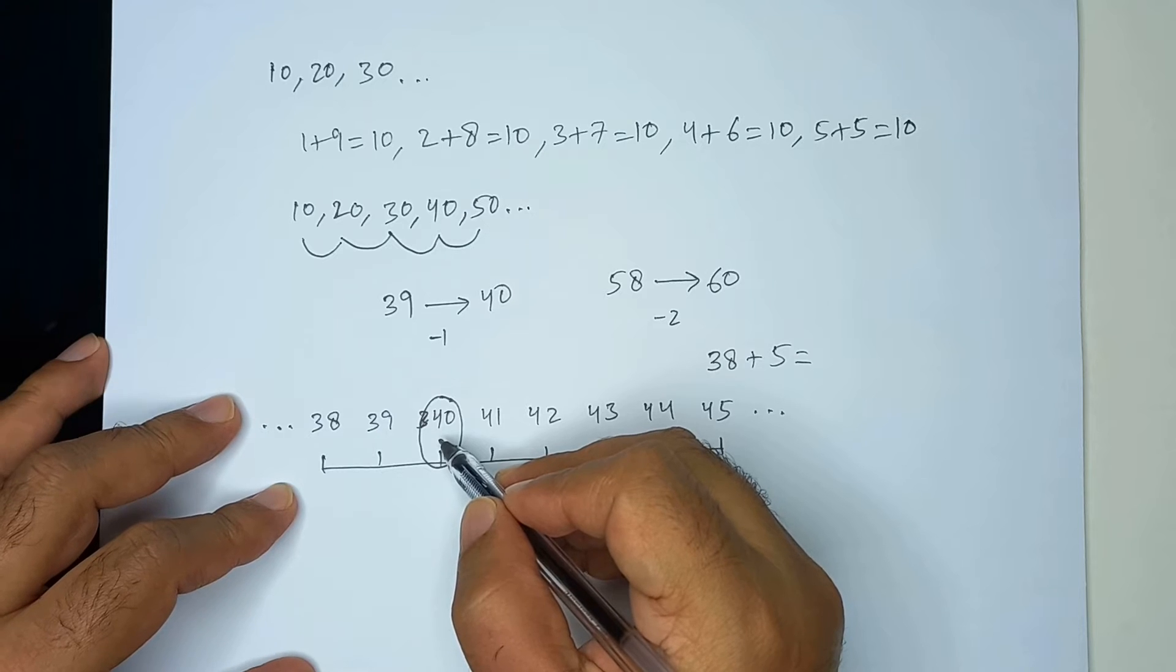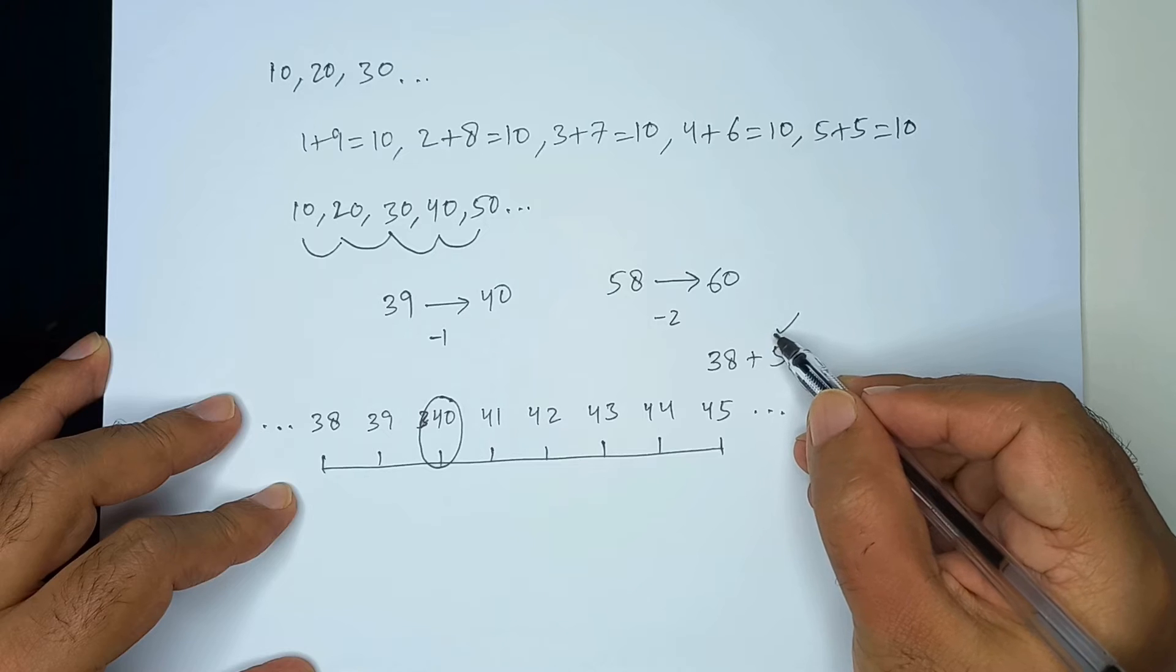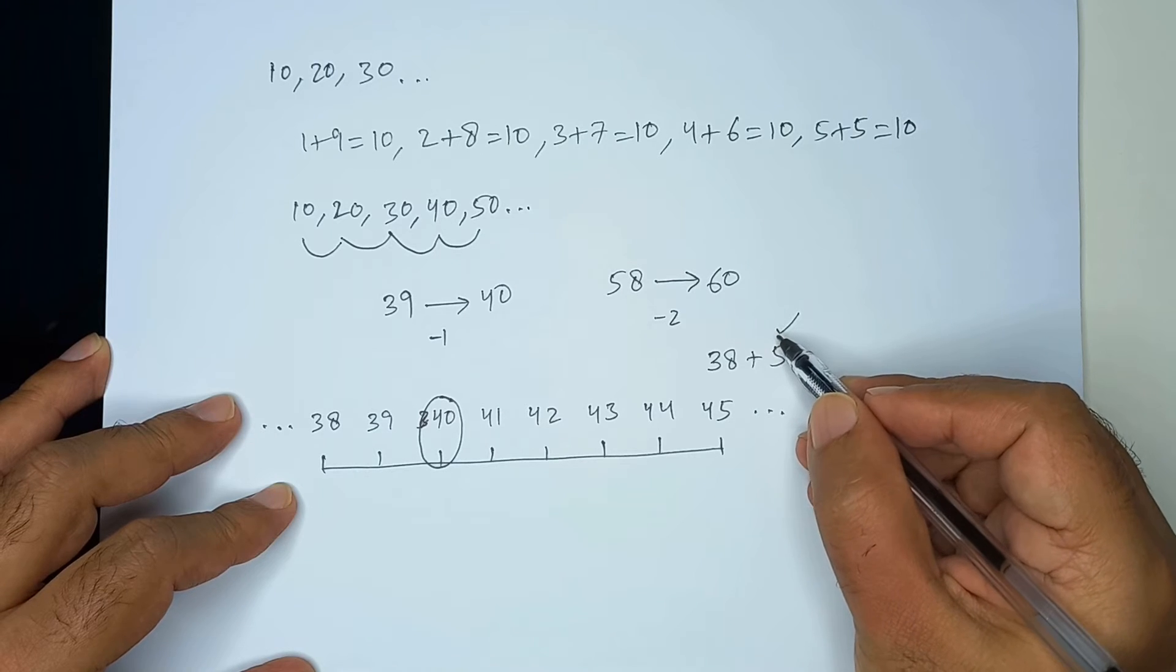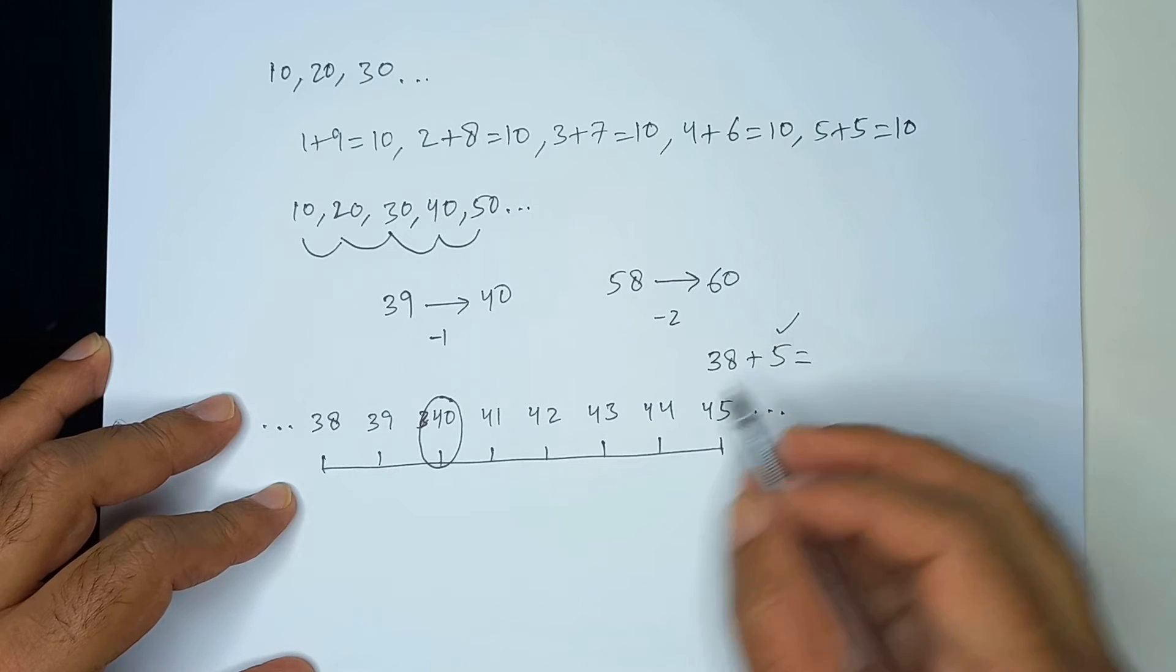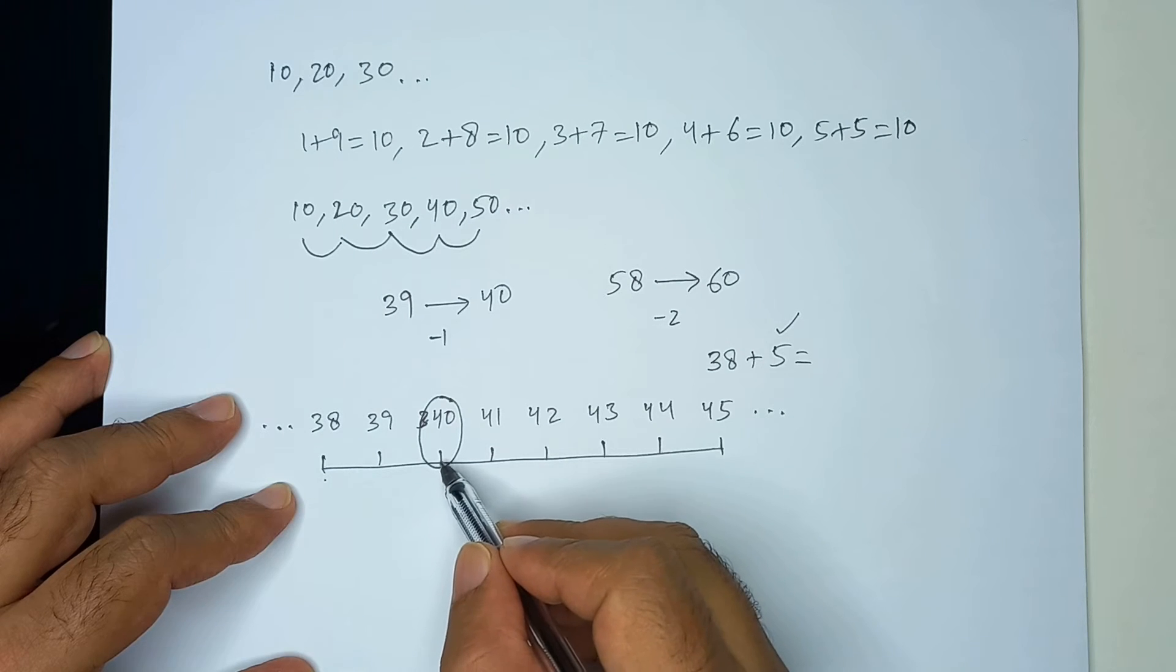So, we take 2 out of this 5, right? We take 2 out of this 5 to make up to 40 and from 38 we right away jump to 40.